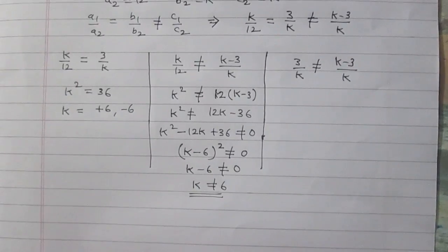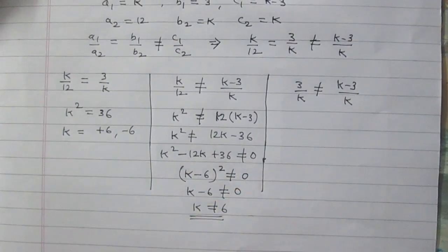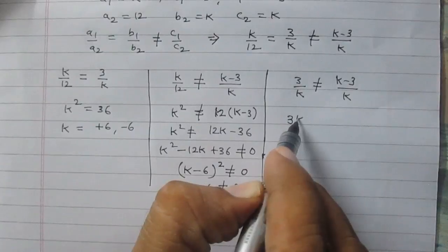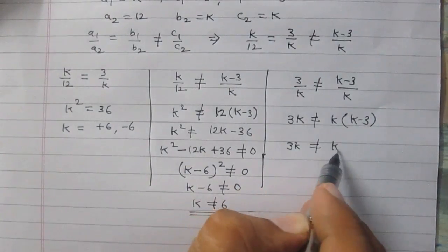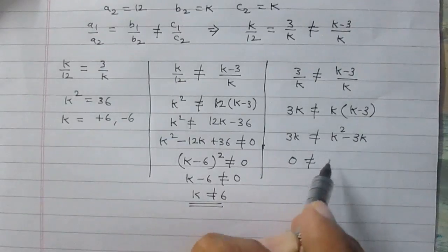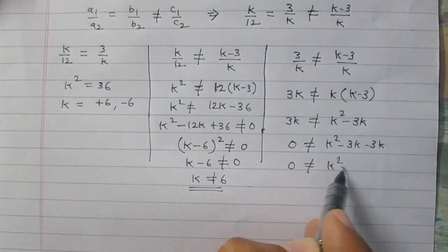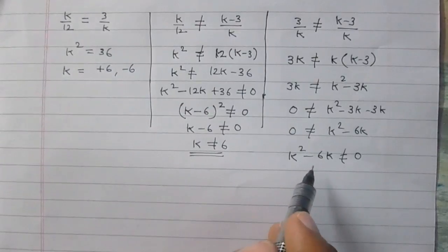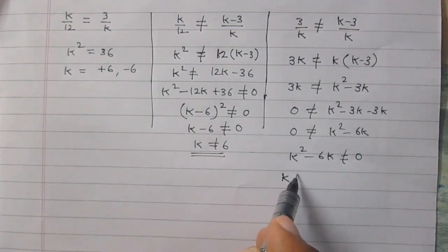So in the second situation, k can take any value but not 6. Now in the third situation, we have another inequality: 3/k ≠ (k - 3)/k. Solving it, 3k ≠ k(k - 3), so 3k ≠ k² - 3k. Transposing, 0 ≠ k² - 6k.